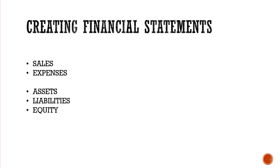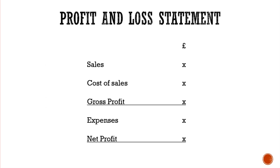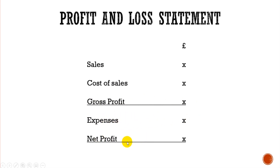Let's look at a profit and loss statement first. The profit and loss statement is compiled of sales and expenses. You'll see we have sales at the top — the sales turnover or revenue for a business. We then minus cost of sales, which gives us the gross profit. We then minus expenses or overheads, which gives us the net profit of the business.